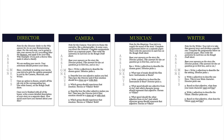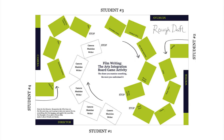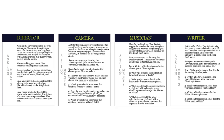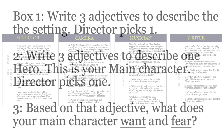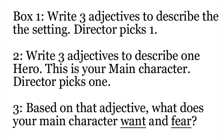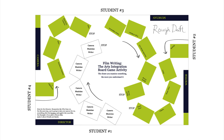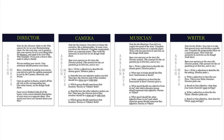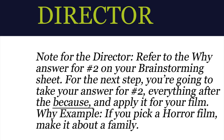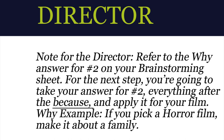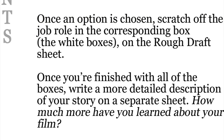Each job department will be given their own assignment sheets. For the next part, the students will find their assigned jobs on the rough draft sheet placed in the middle of the group. This is where we get specific. The answers will further inform the story for the director, who has to choose between the various options. Then those choices are written on the rough draft sheet from the various departments. And at the very end, once all this information is compiled, the director must go through and write a more specific, more elaborate version of the story based on all of the specific and general information provided by the group.